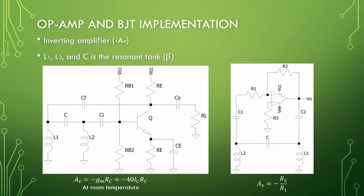For the implementation, first we have our BJT implementation. The gain of this is minus 40 times IC times RC at room temperature. We have our resonant tank back here, and note that we have a capacitor in the feedback and a capacitor at the input.